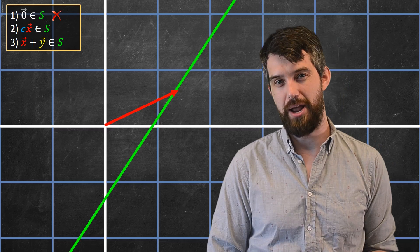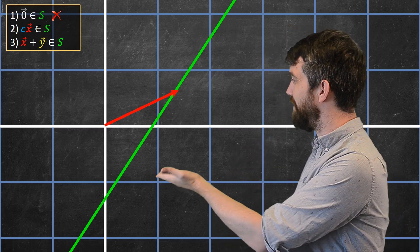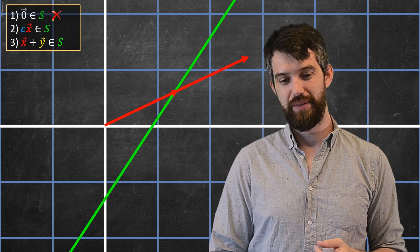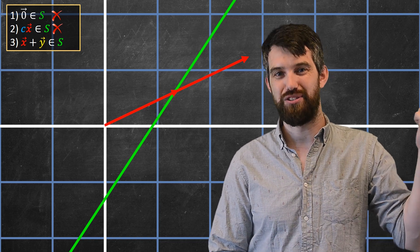Okay, we've got this one vector on it. What about if I multiply it by two, if I stretch this out? Well, then it immediately leaps off the line. So indeed, the second property is also false.